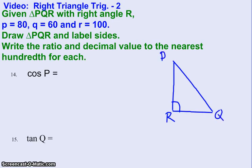Now, what do they mean about these little letters? Well, small p is the side opposite angle P, small q is the side opposite angle Q, and side r is opposite angle R.